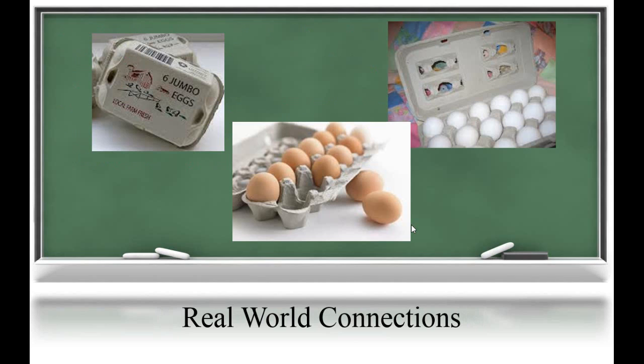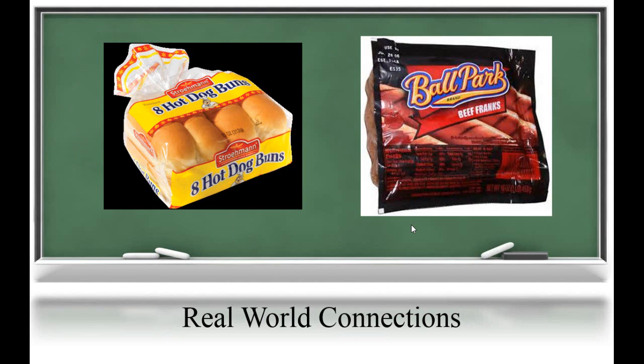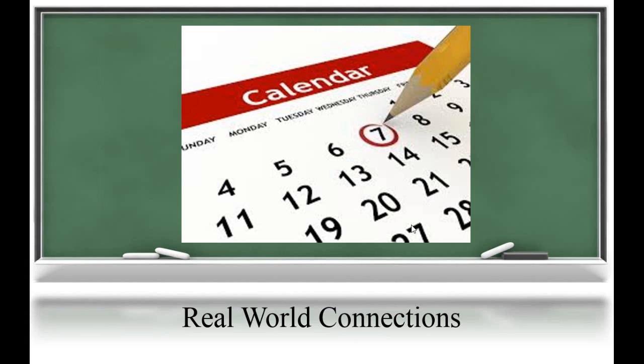Here are some real-world connections for factors and multiples. At the store, you can buy eggs in packs of 6, 12, and 18 — you can easily ask your student multiple or factor questions with these packages. Students would also be able to use factors and multiples to solve the age-old question of how many packs of hot dog buns and how many packs of hot dogs you need to have the same number with no buns or franks left over. And finally, students can practice their use of multiples using a calendar: if I have dance every fourth day of the month and gymnastics every seventh day, which days would I have both?